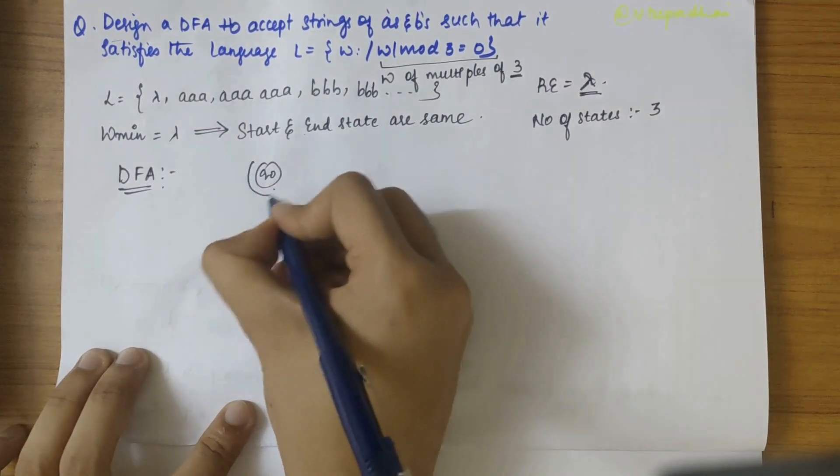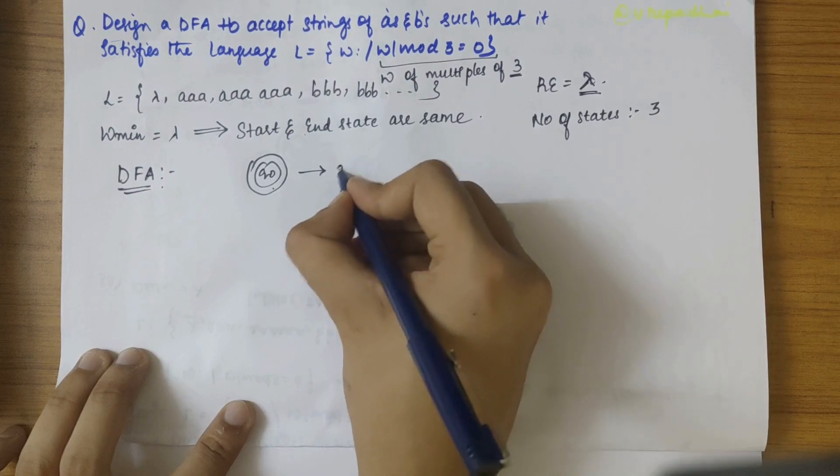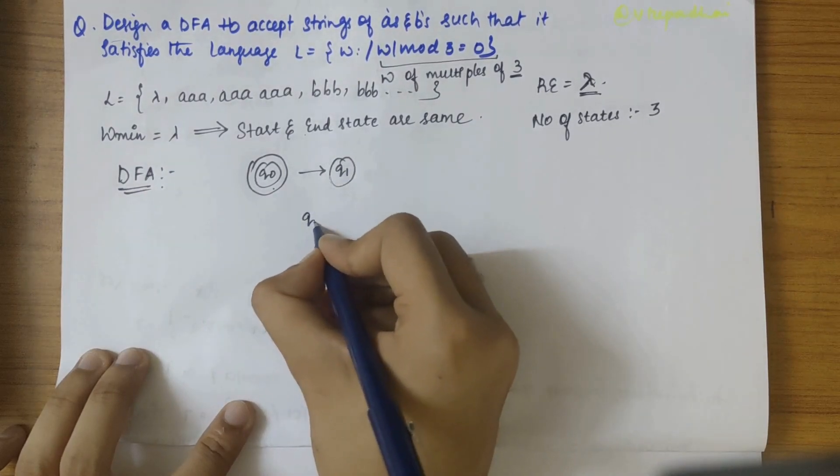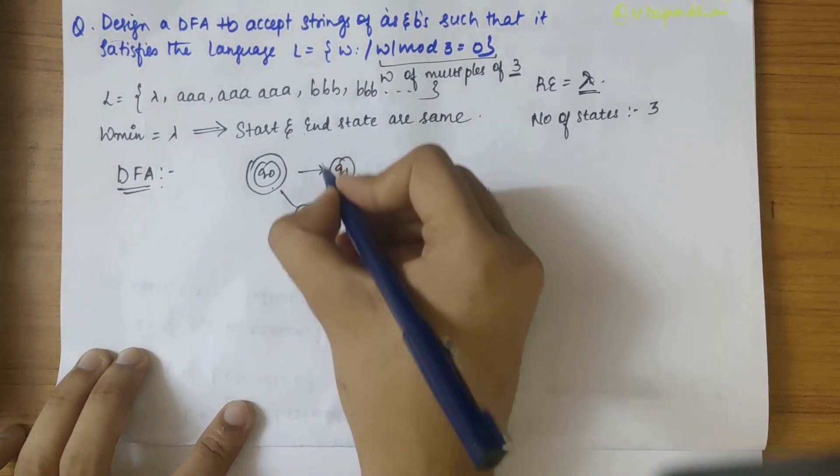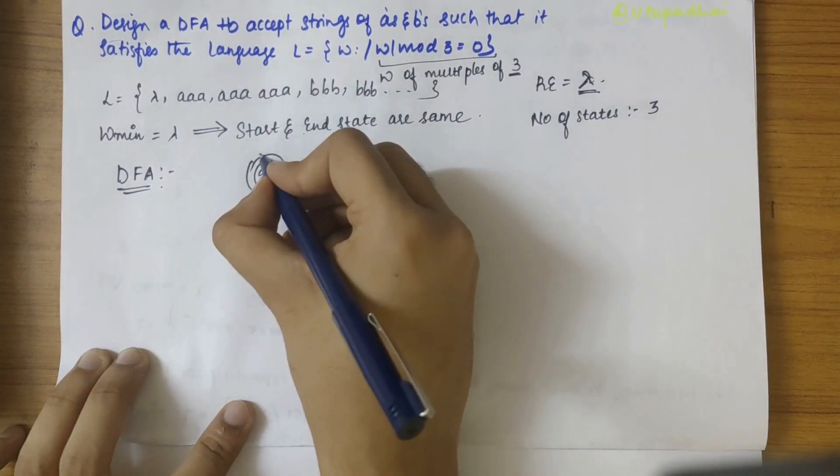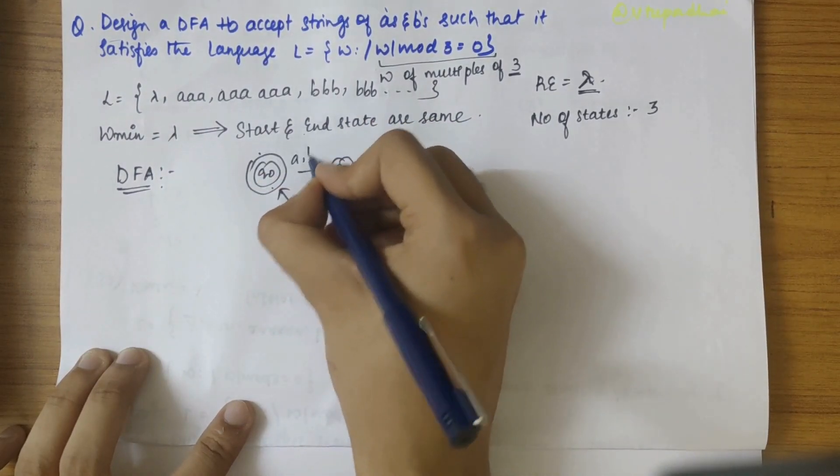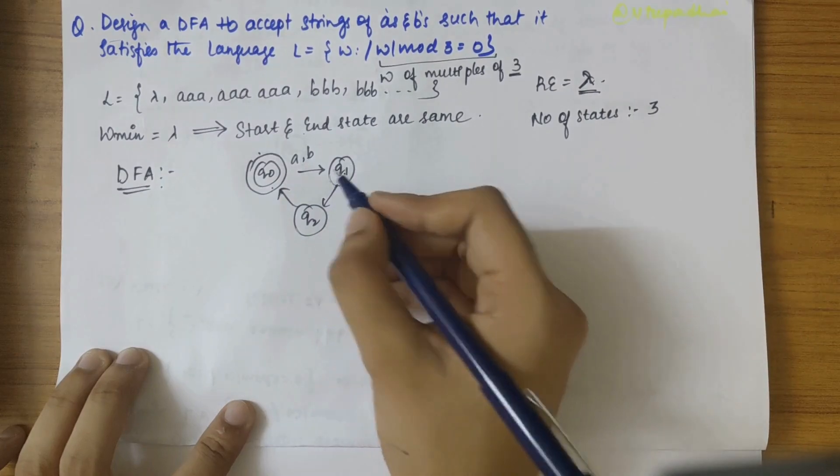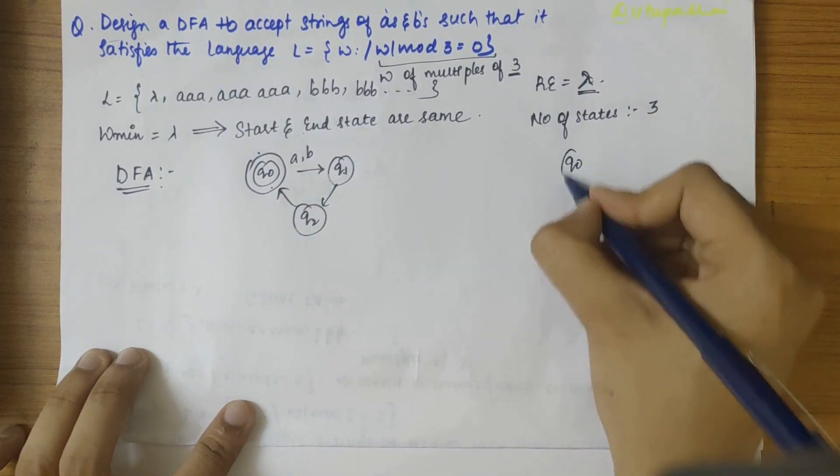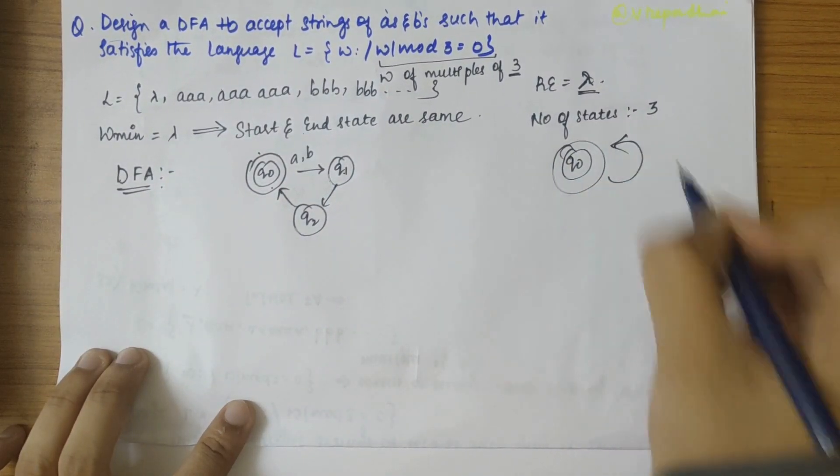So Q0 being the start state and end state followed by Q1 and Q2. So we know that for A and B, it will be Q1. See, ultimately, it has to start from this and come back to this.